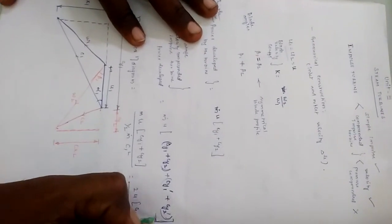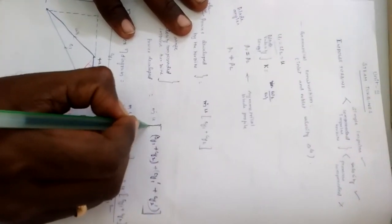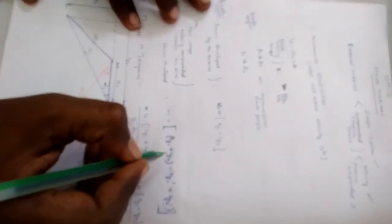This is for the second stage of the turbine. So together, this is the total power developed by the multi-stage impulse turbine.